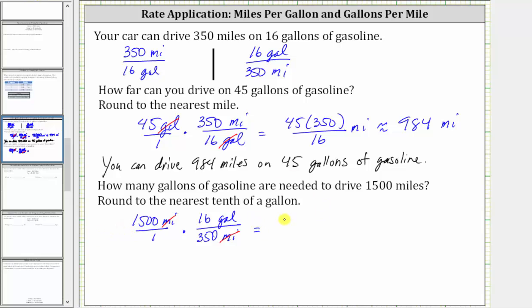So now multiplying, in the numerator we have 1,500 times 16. In the denominator, we have one times 350, which is 350, and now the units are gallons. So now we go back to the calculator and evaluate this quotient.